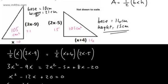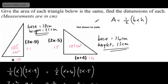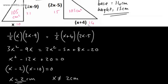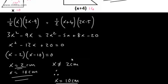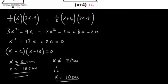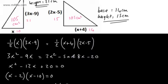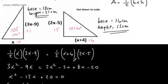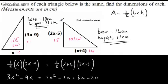We're answering the question — the dimensions of each triangle, not just what X is. We saw that X cannot equal 2, and we need to consciously check whether our algebraic answers are actually valid in the context of the problem.